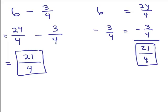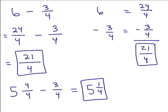The other method for 6 minus 3 fourths: take 6, which is the same as 5 plus 1, and write the 1 as 4 fourths so that I have the same denominator as 3 fourths. So I've got 5 and 4 fourths minus 3 fourths. I still have 5, and 4 fourths minus 3 fourths is 1 fourth — giving 5 and 1 fourth. This could also be done in vertical format.